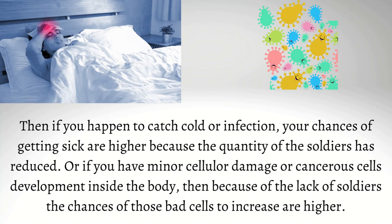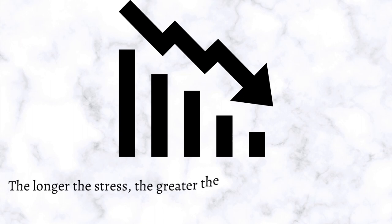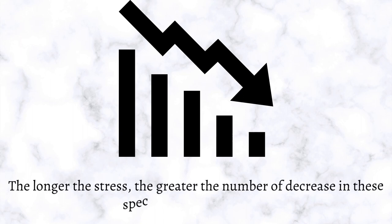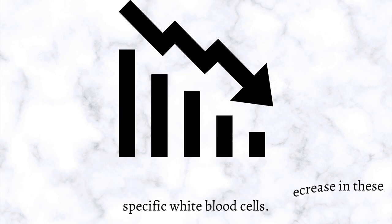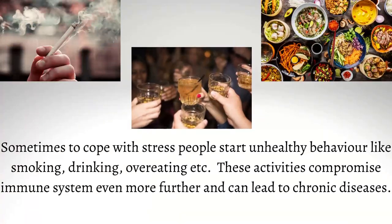These stress hormones can reduce the number of lymphocytes — the marching soldiers in our body. If you have to catch a cold or infection, the chances of getting sick are higher because the quantity of soldiers has reduced. Or if you have minor cellular damage or cancer cells developed inside the body, then because of the lack of soldiers, the chances of those bad cells increasing are higher. The longer the stress, the greater the decrease in these specific white blood cells.